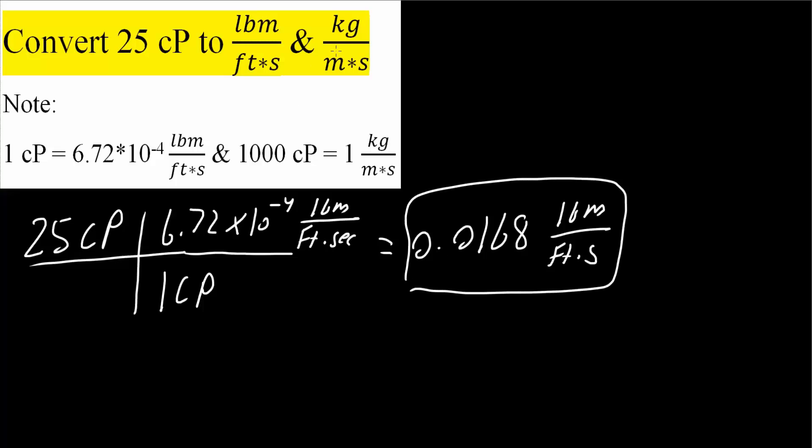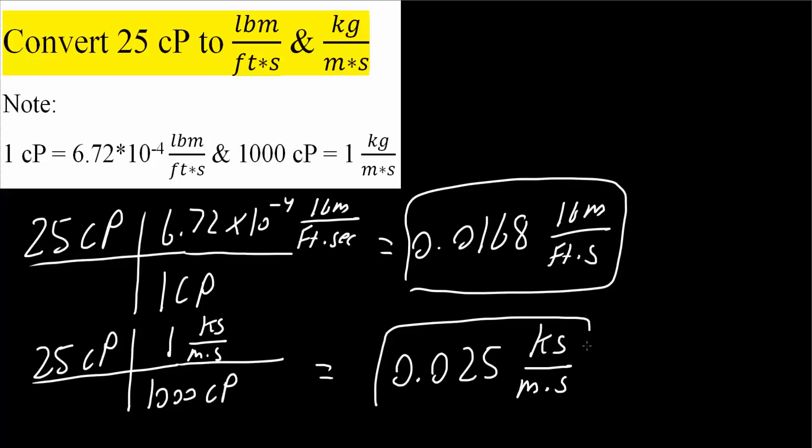Now we want to convert to kilograms divided by meters times seconds. And the conversion is more straightforward. So we have 25 centipose and we know that 1,000 centipose is equal to 1 kilogram divided by meter times seconds. And so we would get 0.025 kilograms divided by meter times seconds. And we would just box in this answer.